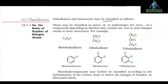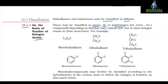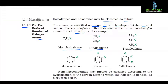Haloalkanes and haloarenes may be classified as follows. 10.1.1 On the basis of the number of halogen atoms. These may be classified as mono, di, or polyhalogen (tri, tetra, etc.) compounds depending on whether they contain one, two, or more halogen atoms in their structure. For example, you can see here the structures: mono-haloalkane, di-haloalkane, tri-haloalkane, mono-haloarene, di-haloarene, and tri-haloarene.